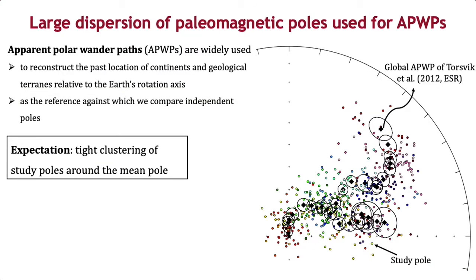Apparent polar wanderpaths, or APWPs, are commonly used in the Earth sciences to reconstruct the past location of continents relative to the Earth's spin axis. They also provide a reference against which we compare independent poles to assess relative latitudinal motions or rotations.